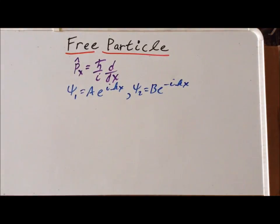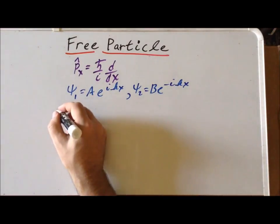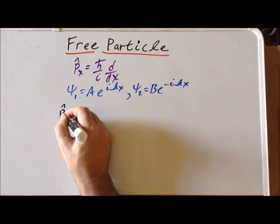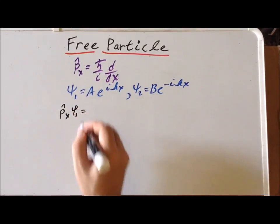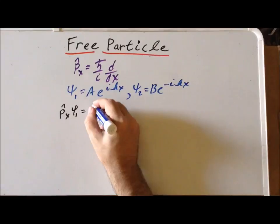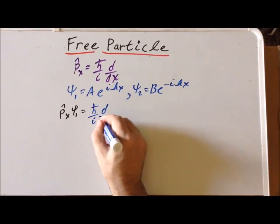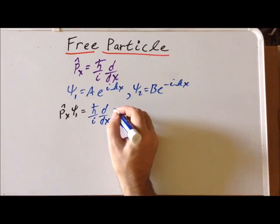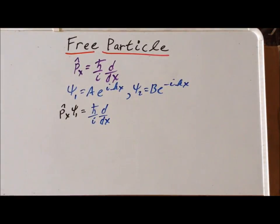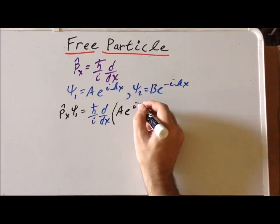So let's first determine what the momentum is for psi 1. We do that by having our operator act upon the wave function. So that gives us h-bar over i times the first derivative with respect to x of our wave function, which is A times e to the i kx.